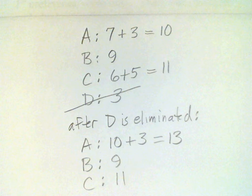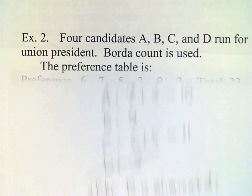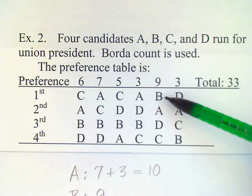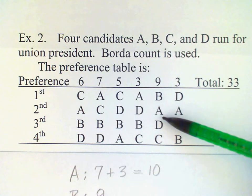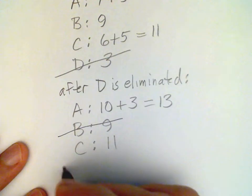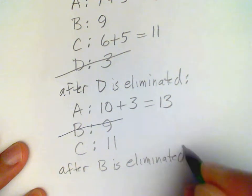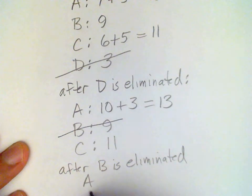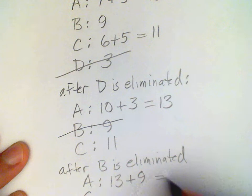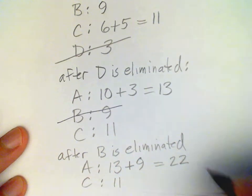Still no one has a majority, so now we eliminate B. We go back to the table and find the column where B was at the top. The voters' next preference moves up to A, so A gets those 9 votes. After B is eliminated, we just have two candidates left: A has the 13 from before plus the 9 from B, giving 22. C has 11. So A is now the winner.